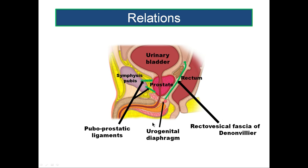Now let us look at the relations of these surfaces. The anterior surface, which is convex, is related anteriorly to the lower half of the symphysis pubis.